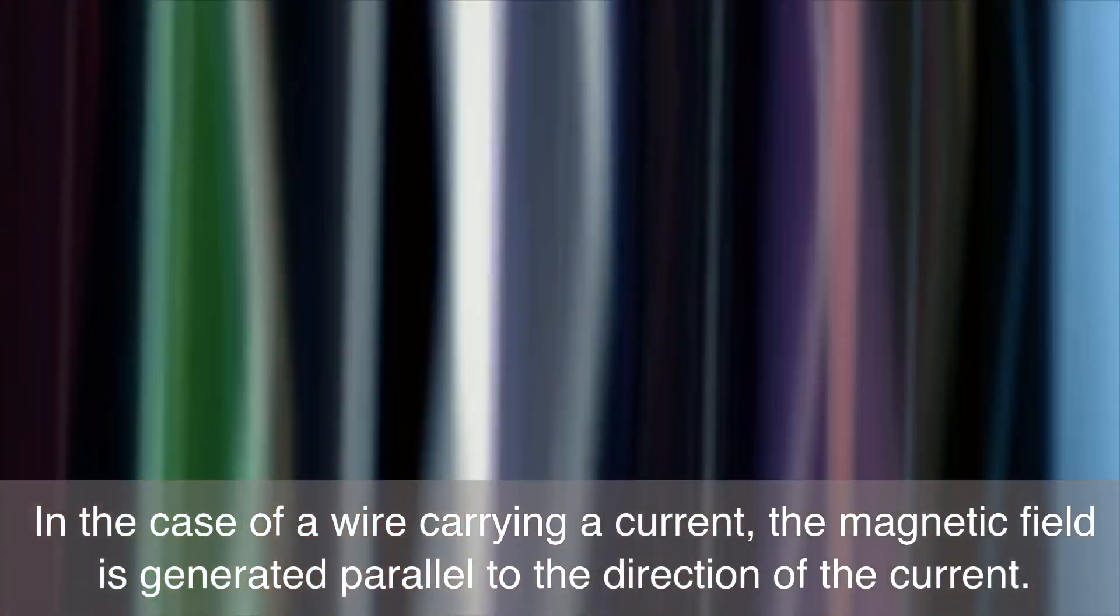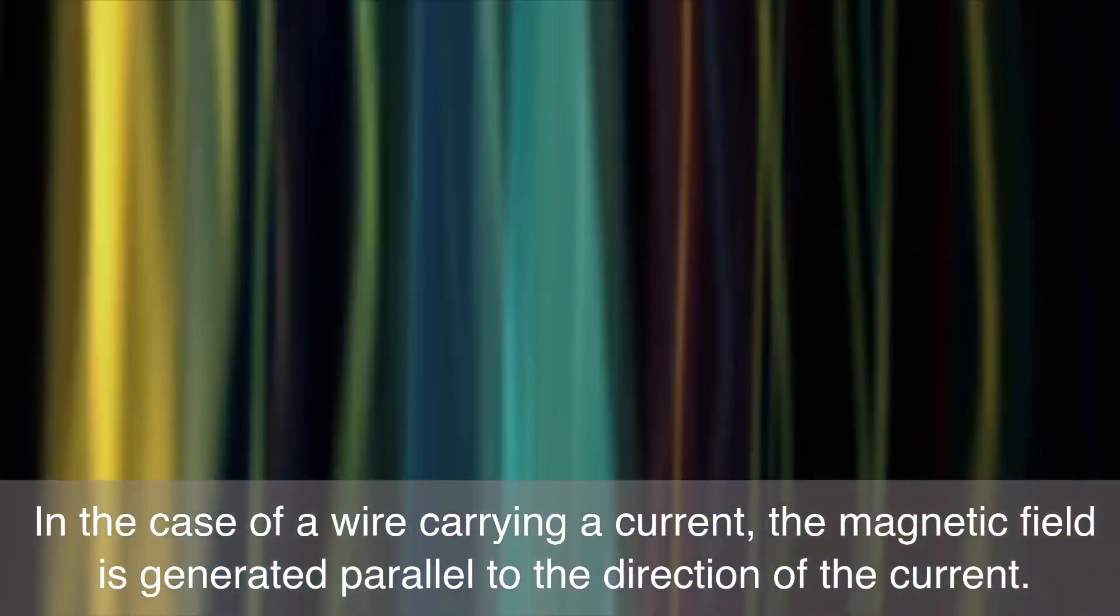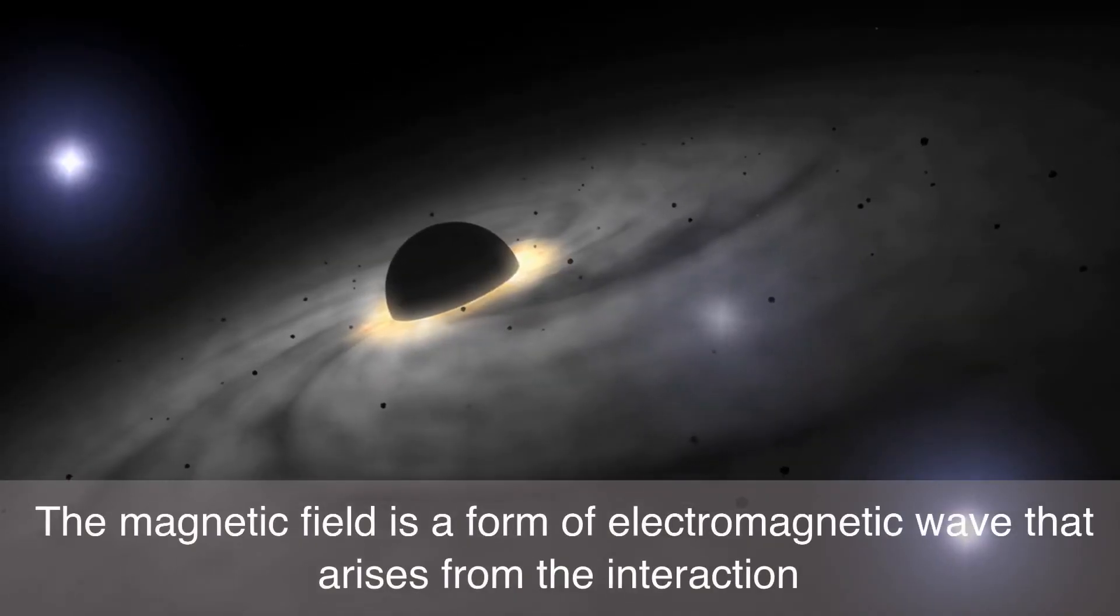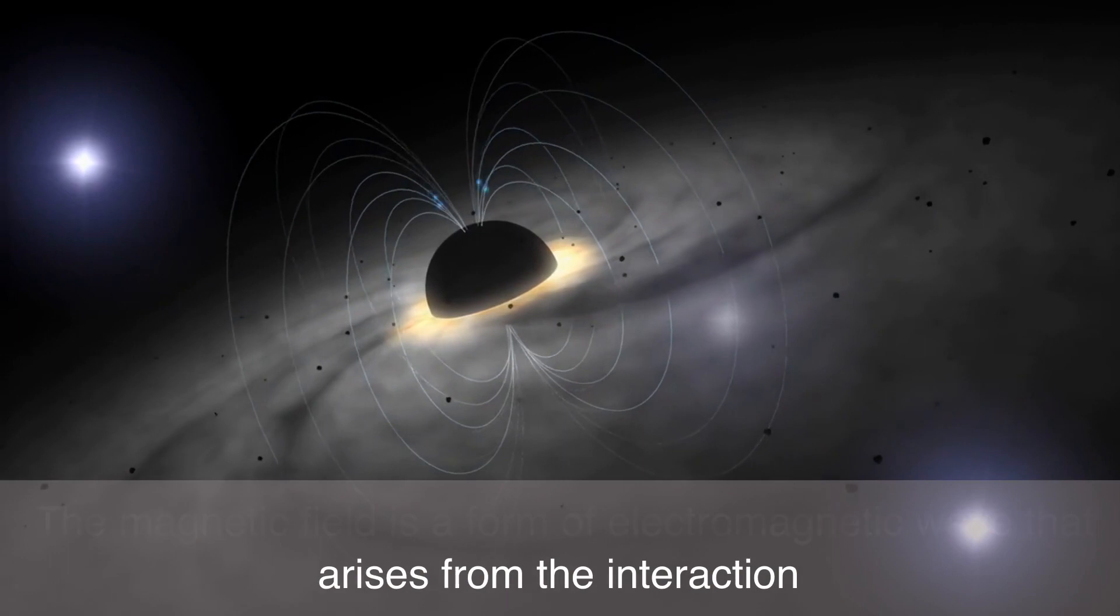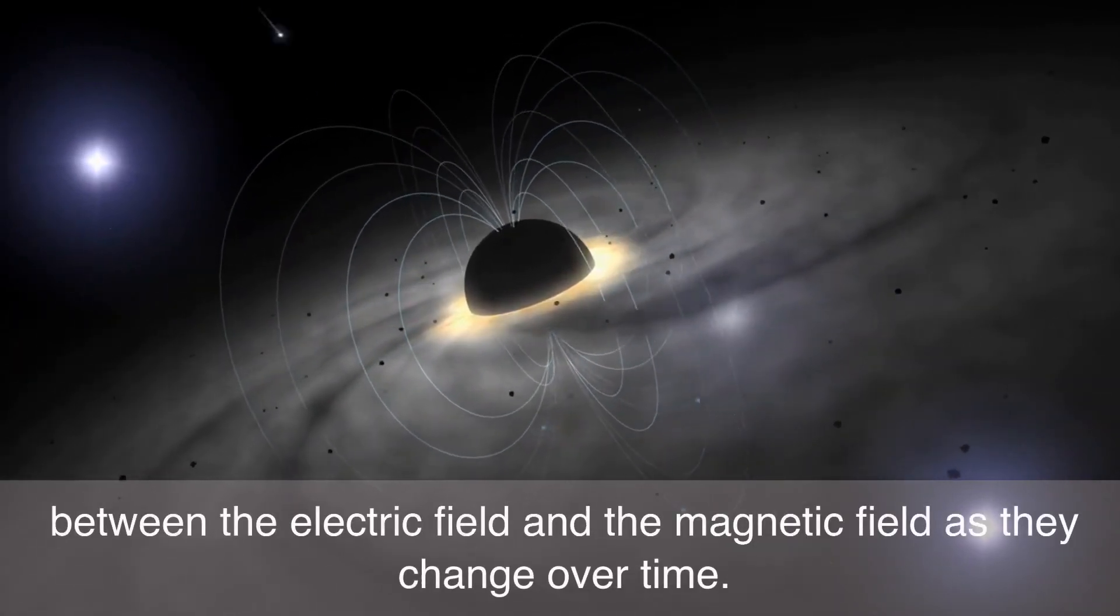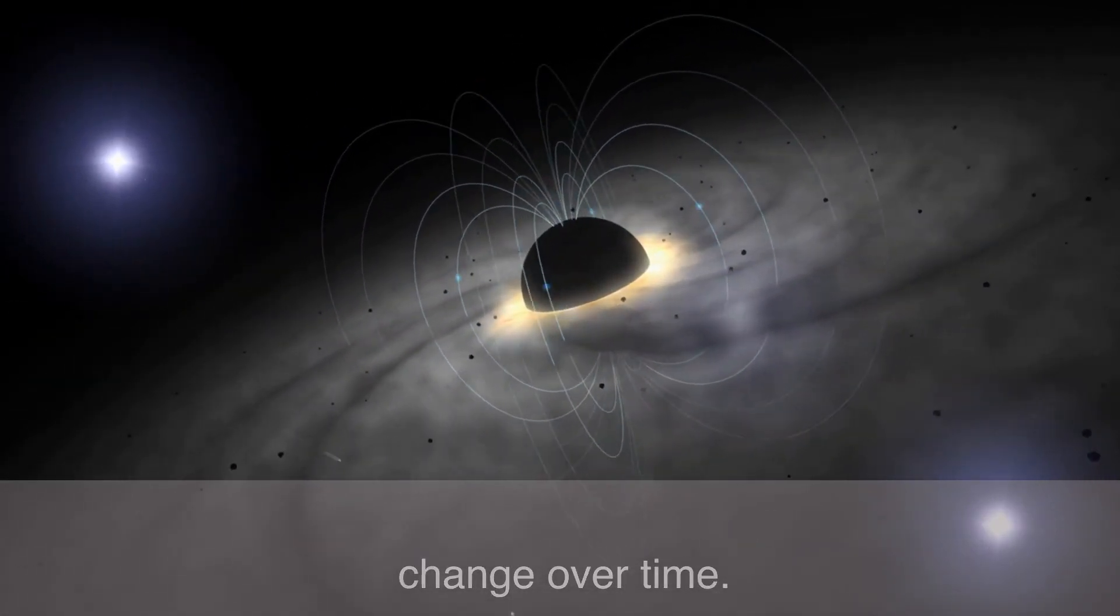In the case of a wire carrying a current, the magnetic field is generated parallel to the direction of the current. The magnetic field is a form of electromagnetic wave that arises from the interaction between the electric field and the magnetic field as they change over time.